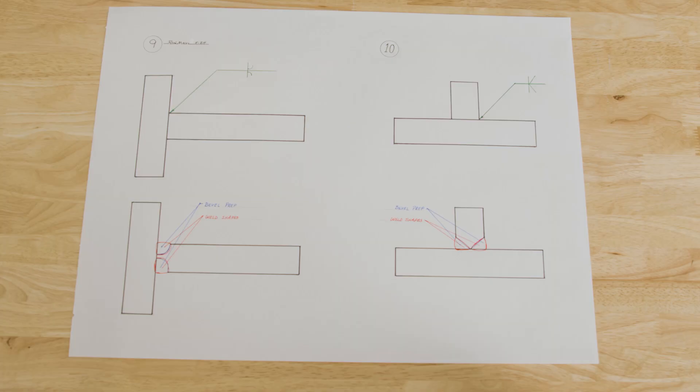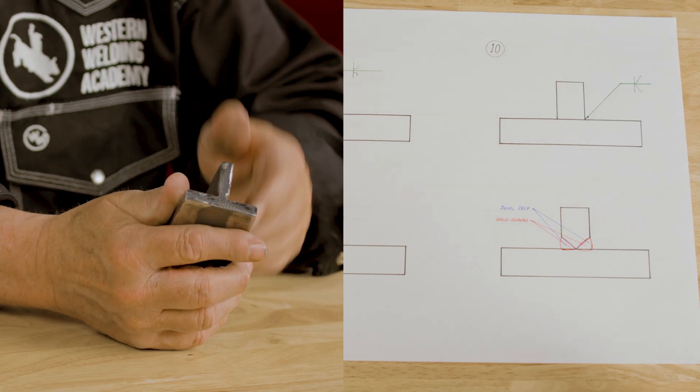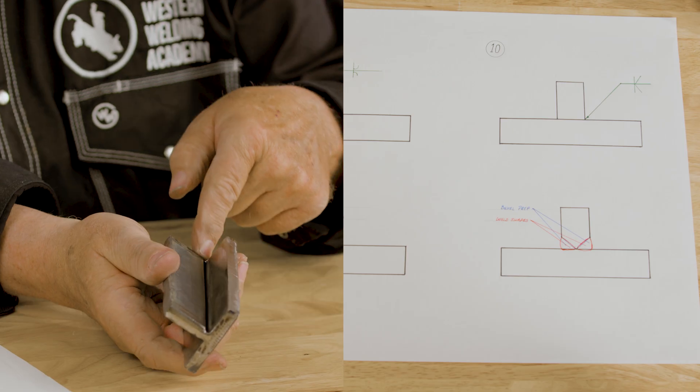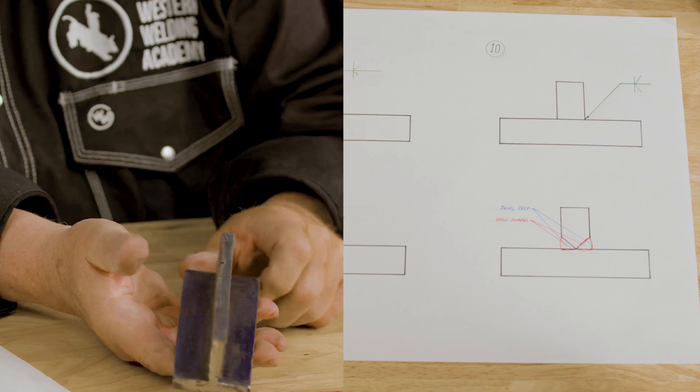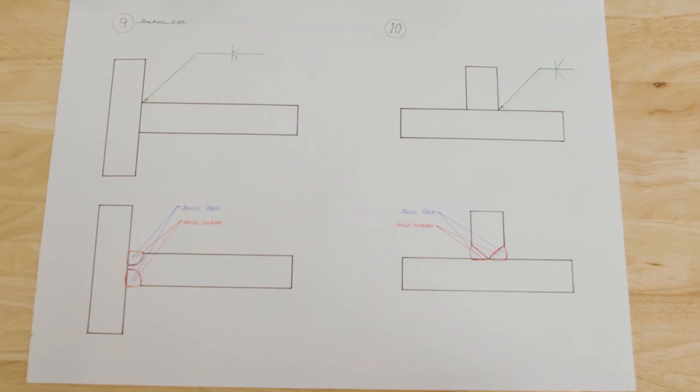Number 10, again, almost the same thing as number nine, only the bevels are straight both sides. And you would obviously prep that to almost an arrowhead shape and then use your weld to fill up both of those. Again, almost a hundred percent weld and you don't have a fillet in the way of whatever you're trying to do.